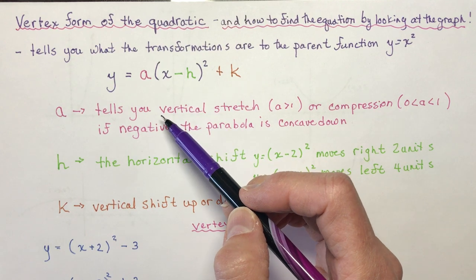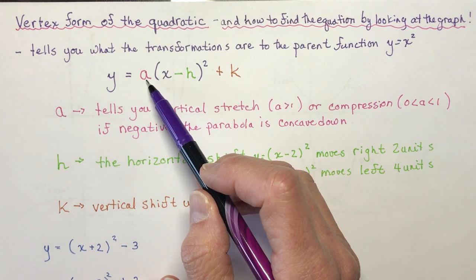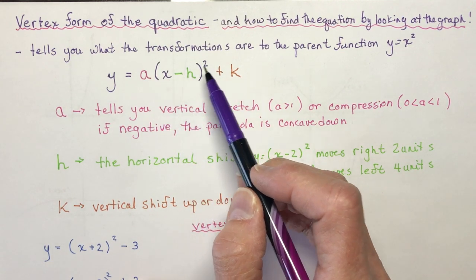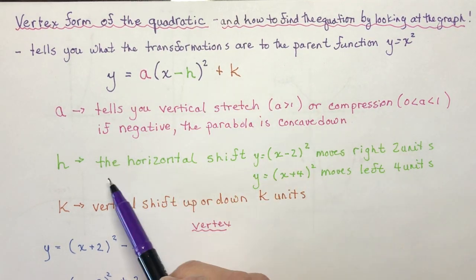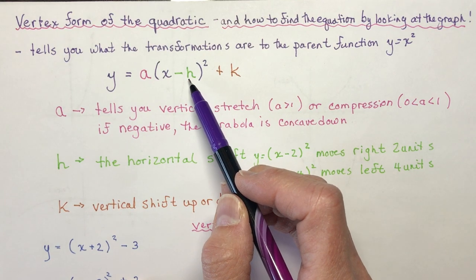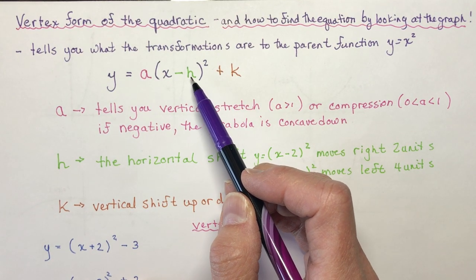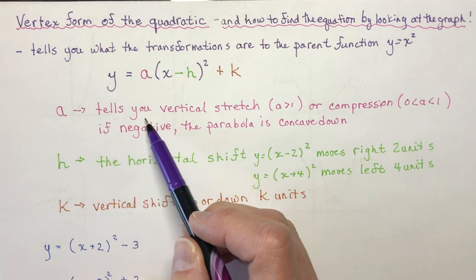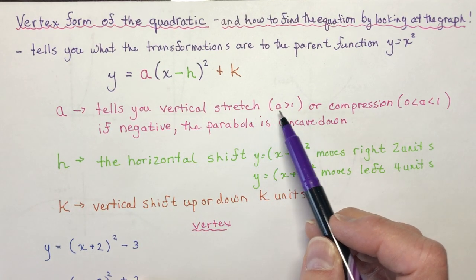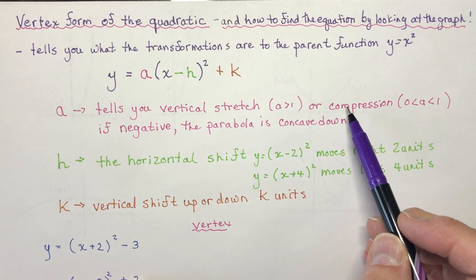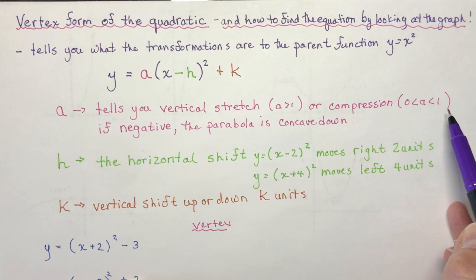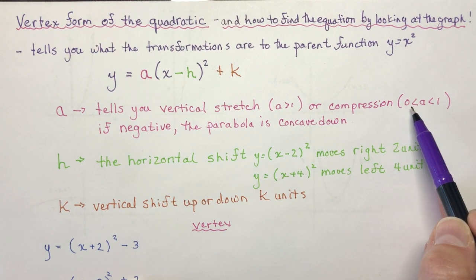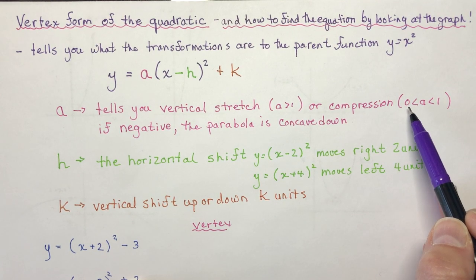Remember that a tells you about vertical stretch or compression. y is vertical, k is vertical — and h stands for horizontal. So a tells you the vertical stretch if a is greater than 1, or compression if a is between 0 and 1. Don't say 'less than 1' because less than 1 could include a stretch with a reflection — when you go negative, you have a reflection.